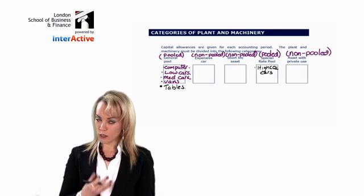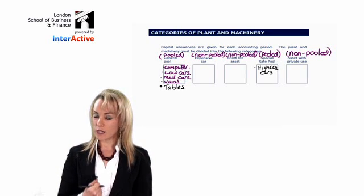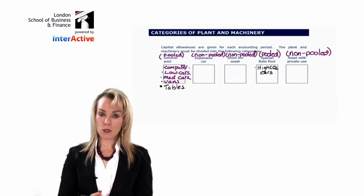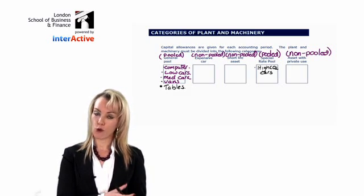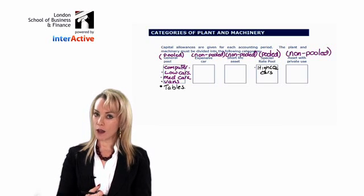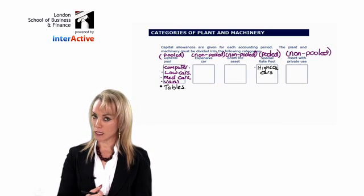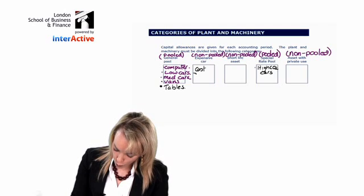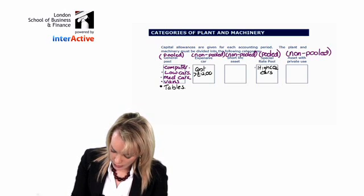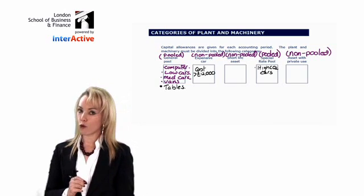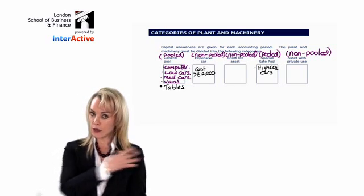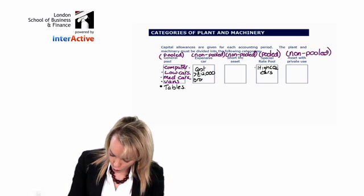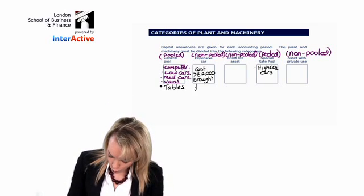Before the rules that we have today, the previous rules divided cars into cheap and expensive. So if you bought a car last year or the year before, then the car was defined as expensive. An expensive car is one that costs more than £12,000 and it was bought before the current year. So we say that it was brought forward from before.